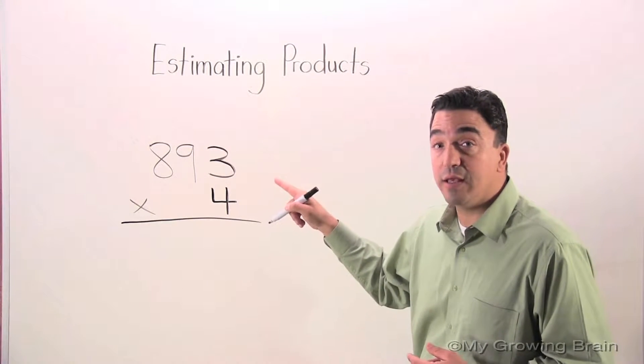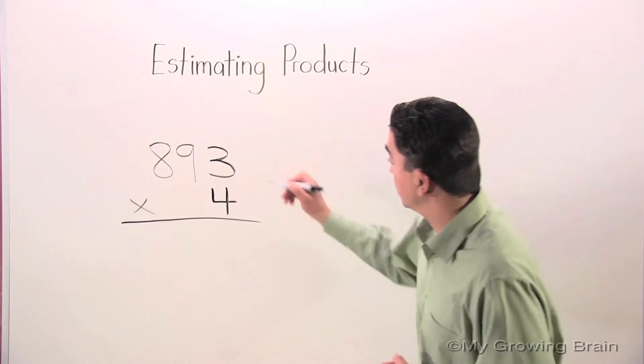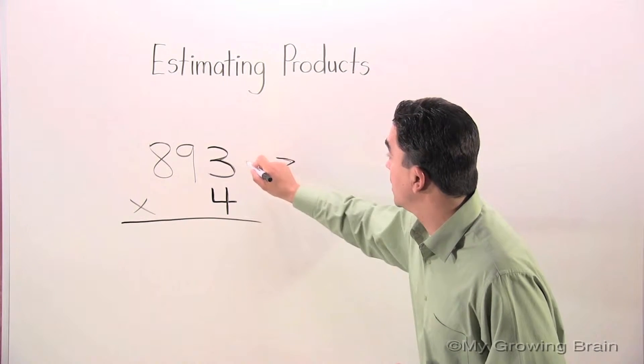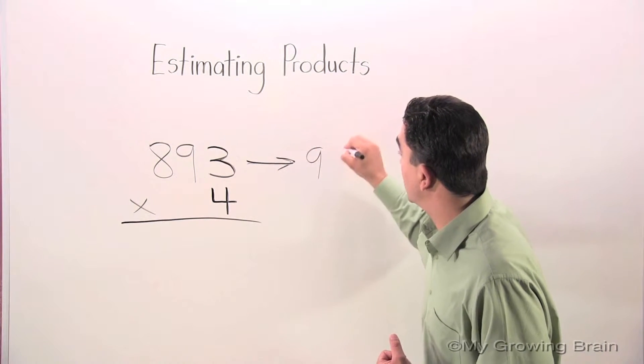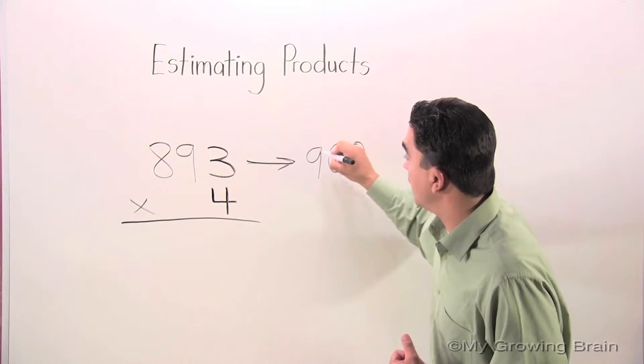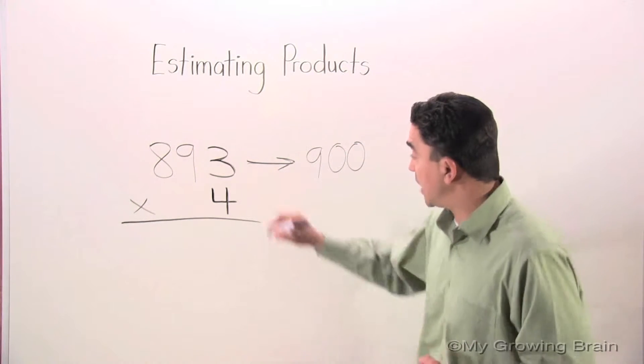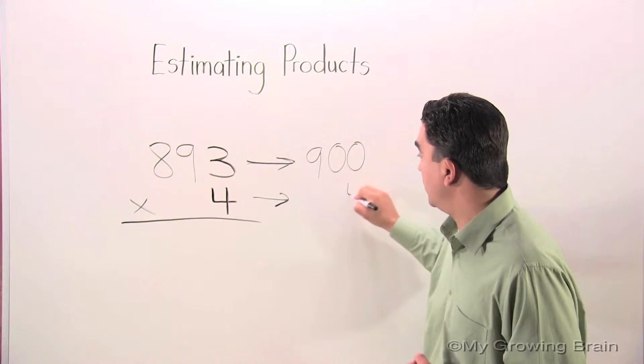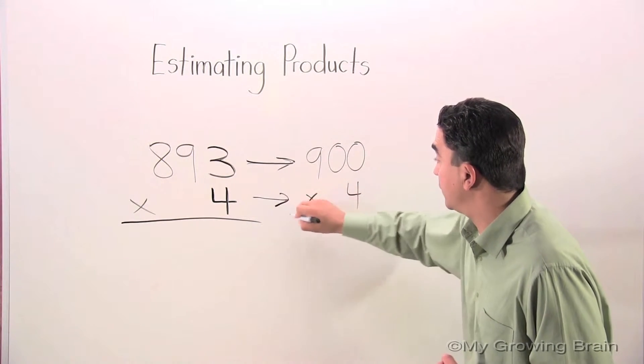We're going to round 893 to the nearest 100. 900. Then I just slide my 4 over and I multiply it.